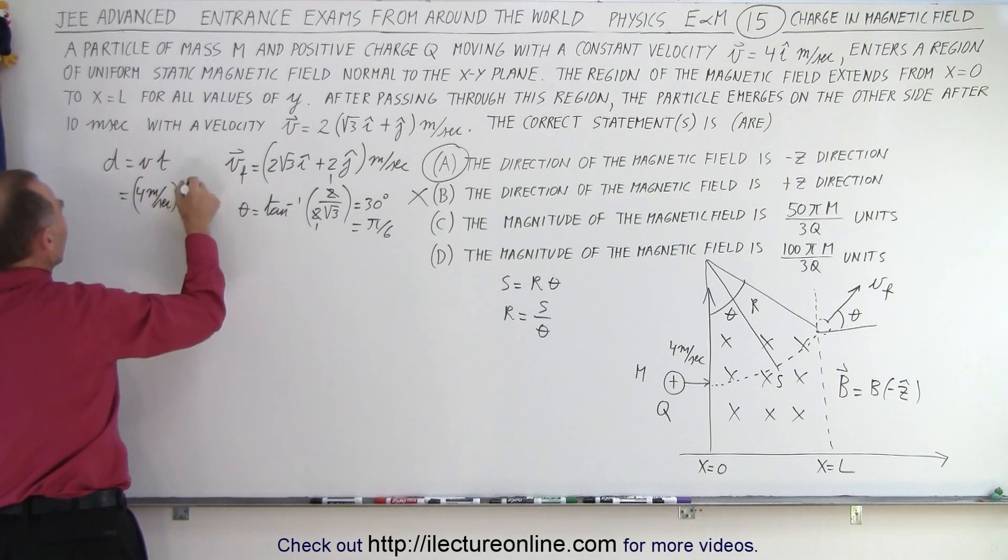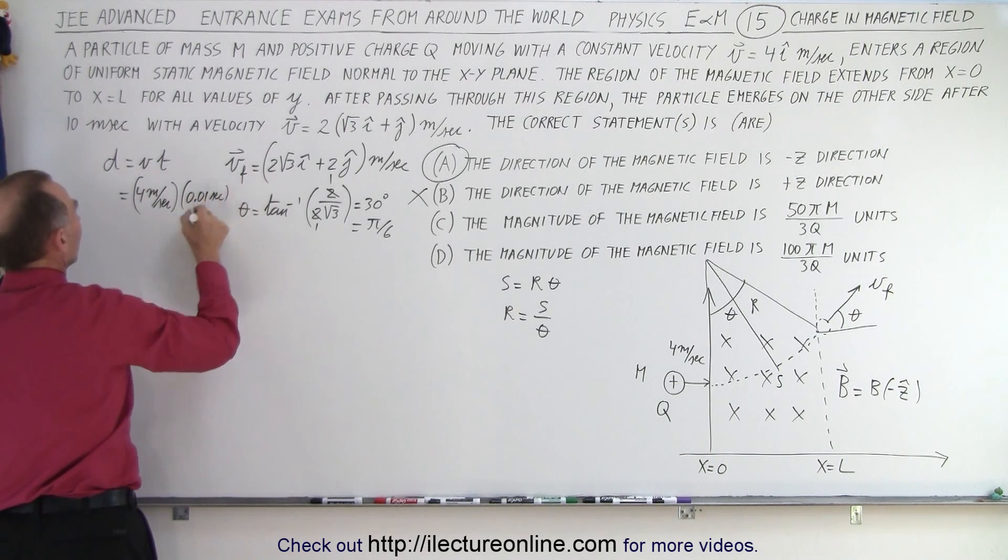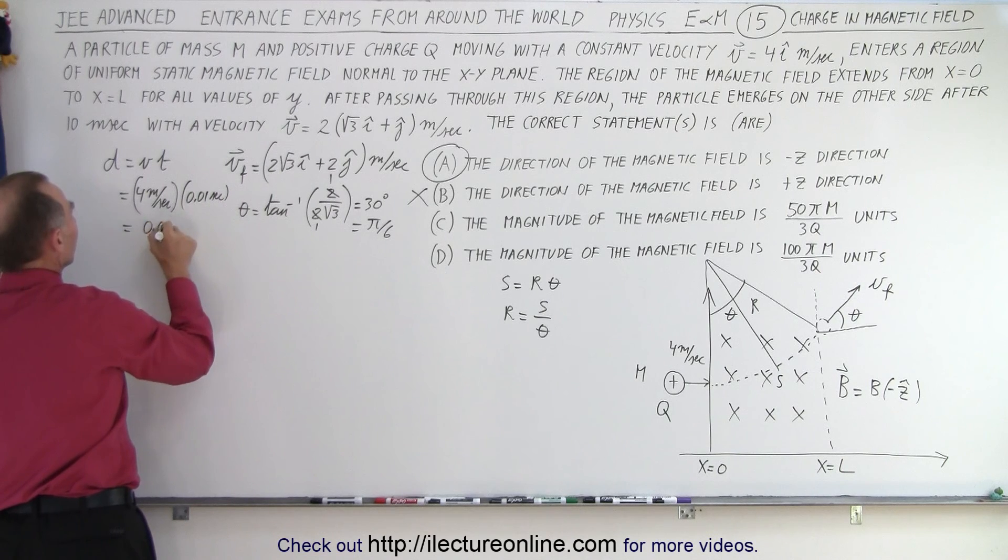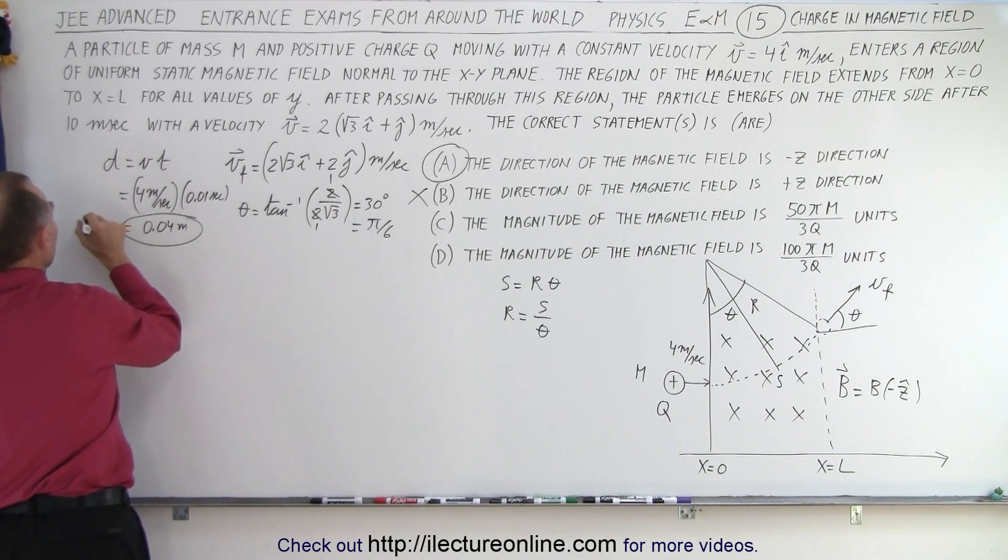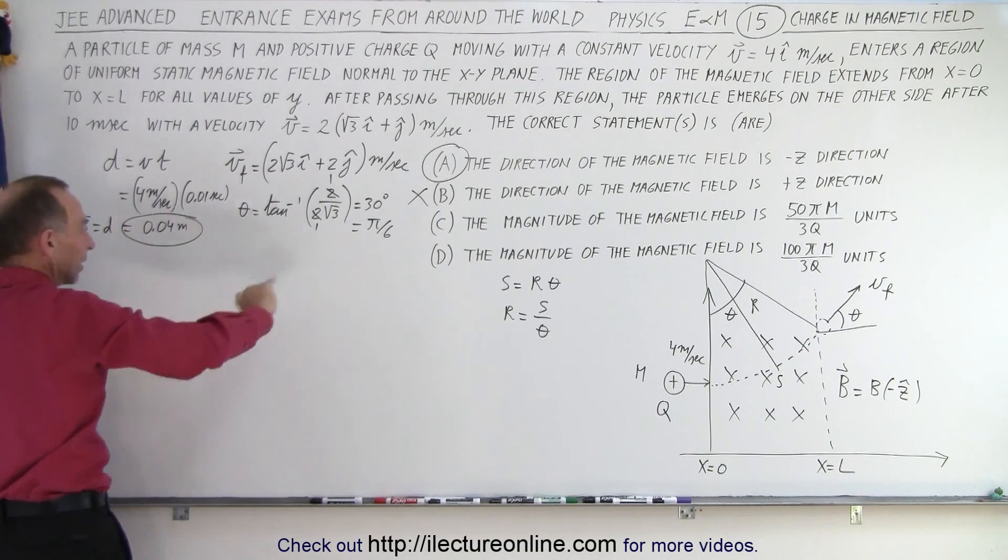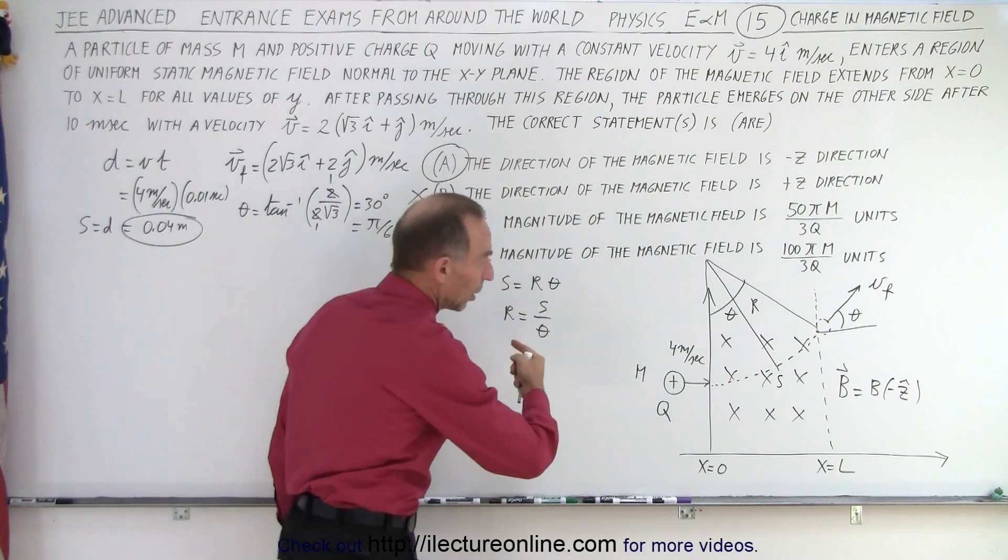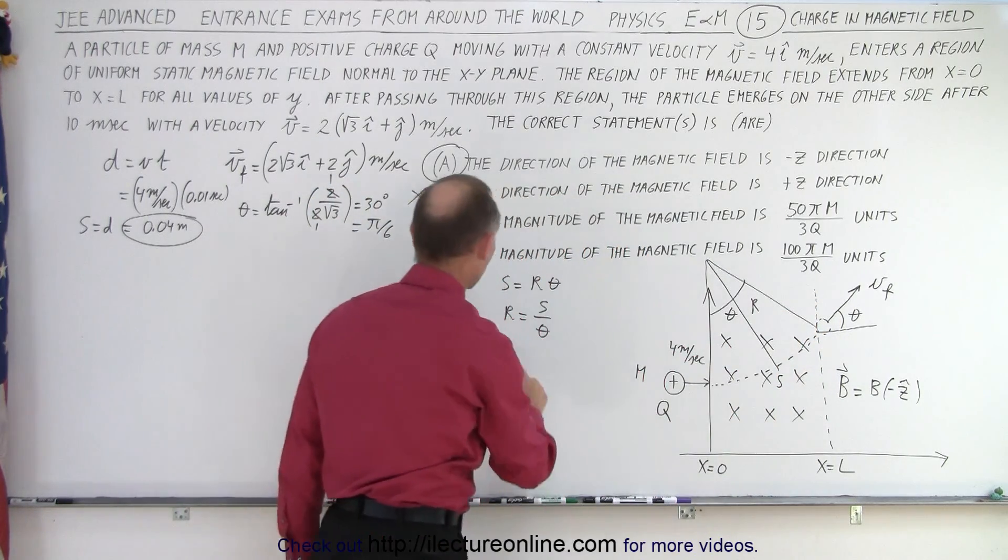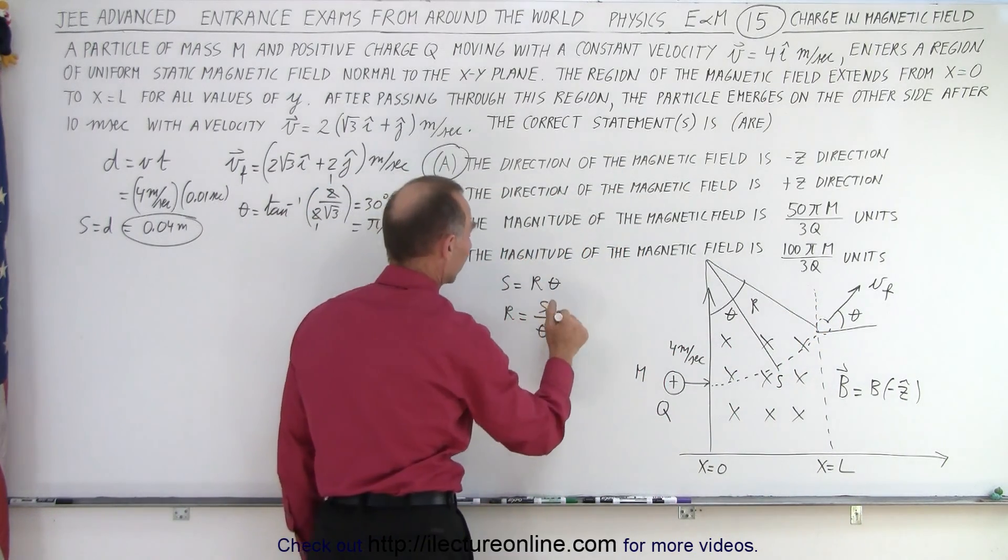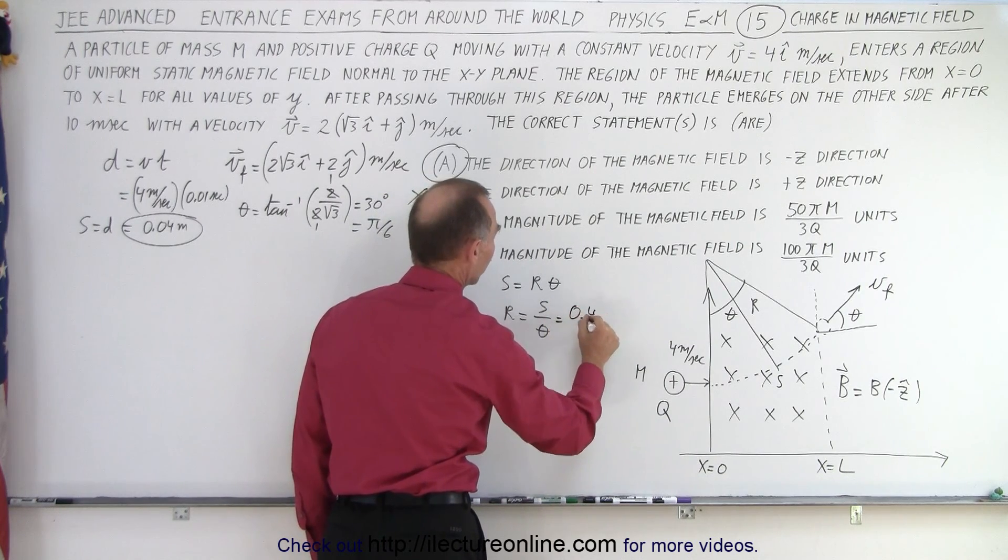So we know that we travel 0.04 meters. The travel distance d, which is equal to s the arc length, we travel a distance of 0.04 meters, 4 centimeters along this arc length.